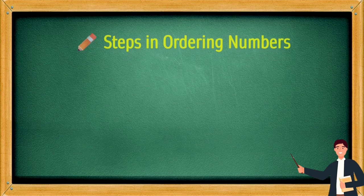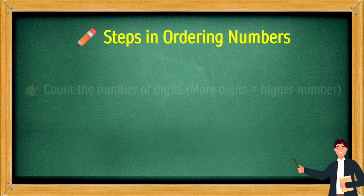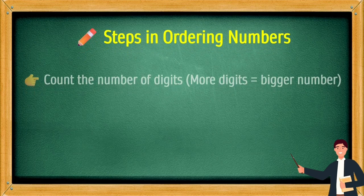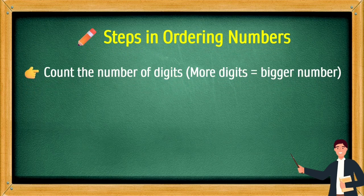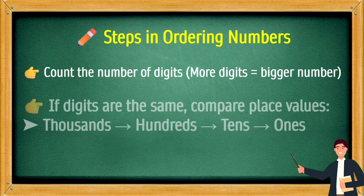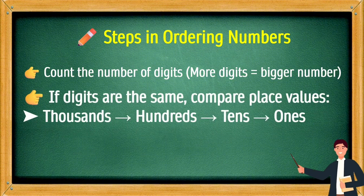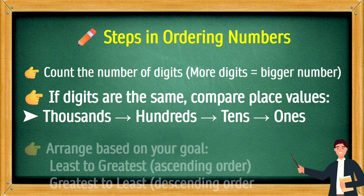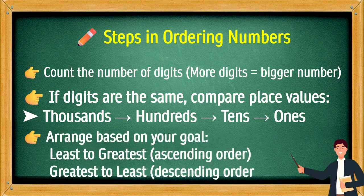Steps in ordering numbers: First, count the number of digits — more digits means a bigger number. If the digits are the same, compare place values: thousands, hundreds, tens, and ones. Then arrange based on your goal. Least to greatest is ascending order; greatest to least is descending order.